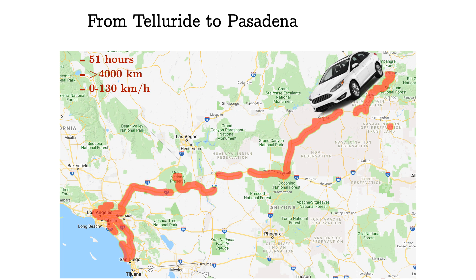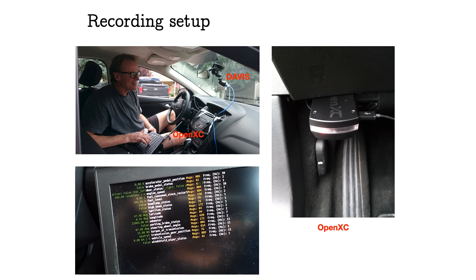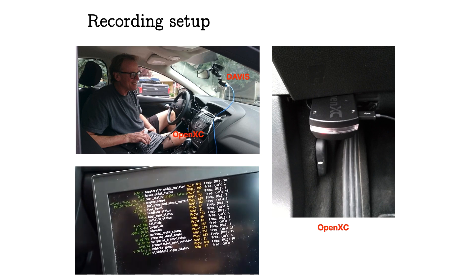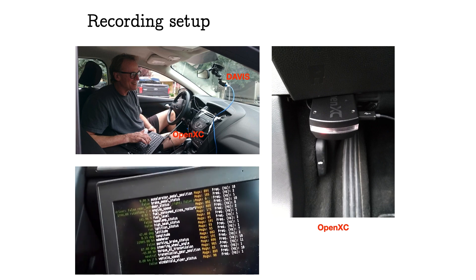Now let's look at the DDD-20 dataset. DDD-20 contains 51 hours of parallel APS and DVS recordings where the car was driven for more than 4,000 kilometers from Telluride to Pasadena. The speed of the car ranges from 0 to 130 kilometers per hour. This is our recording setup: the DAVIS camera is installed on the windshield for capturing the scene, and the OpenXC Ford reference vehicle interface was connected to the passenger compartment OBD-2 port to read out control and diagnostic data from the car's CAN bus. A short video demonstrates the recording setup reading out control signals online.